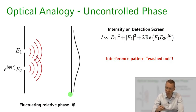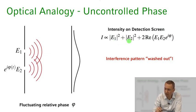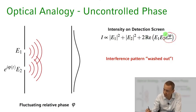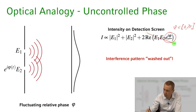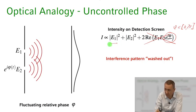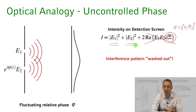We can also see this more formally: the intensity of the light field on the detector screen is the incoherent sum of the intensities of the two light fields plus the interference term. If phi fluctuates between zero and two pi, then this interference term on average is going to be zero and we're just not going to see it. Any interference phenomena is lost and we're left with the incoherent sum of the two intensities.